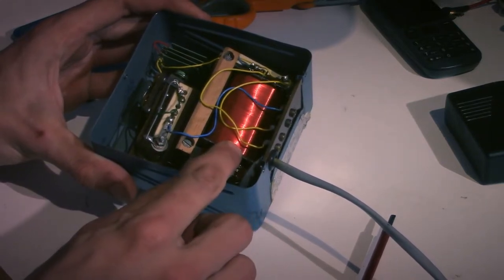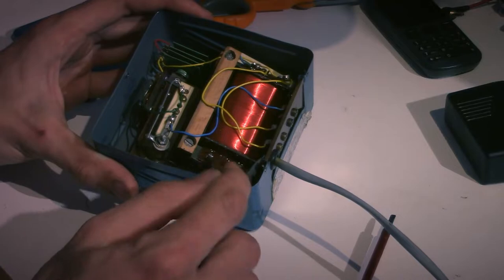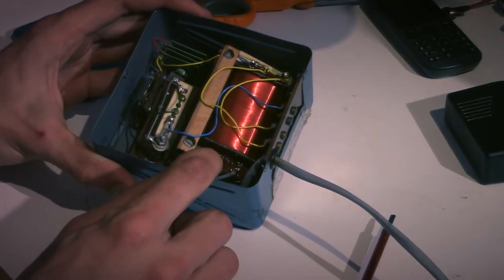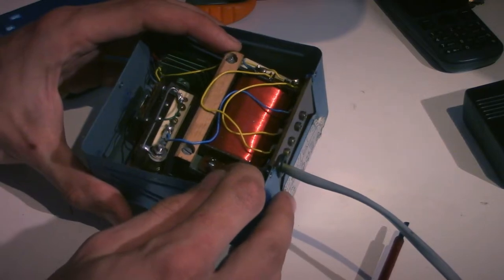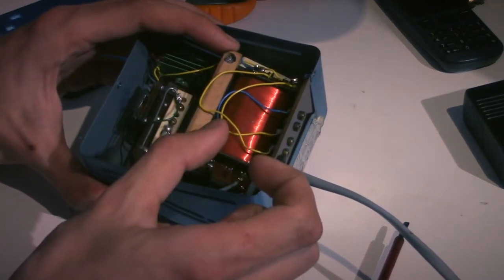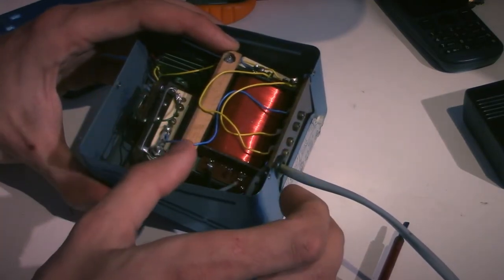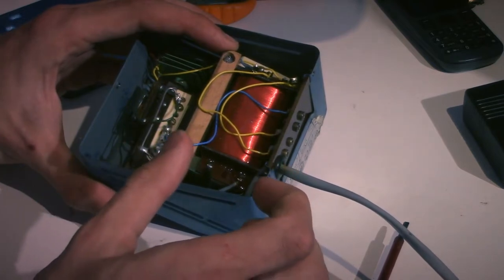You see, this is a very low frequency transformer because it operates at mains power frequency, which is 50 hertz here in Europe. Higher frequency transformers can be made much smaller. Okay, so the higher the frequency of the power, the smaller a transformer can be.